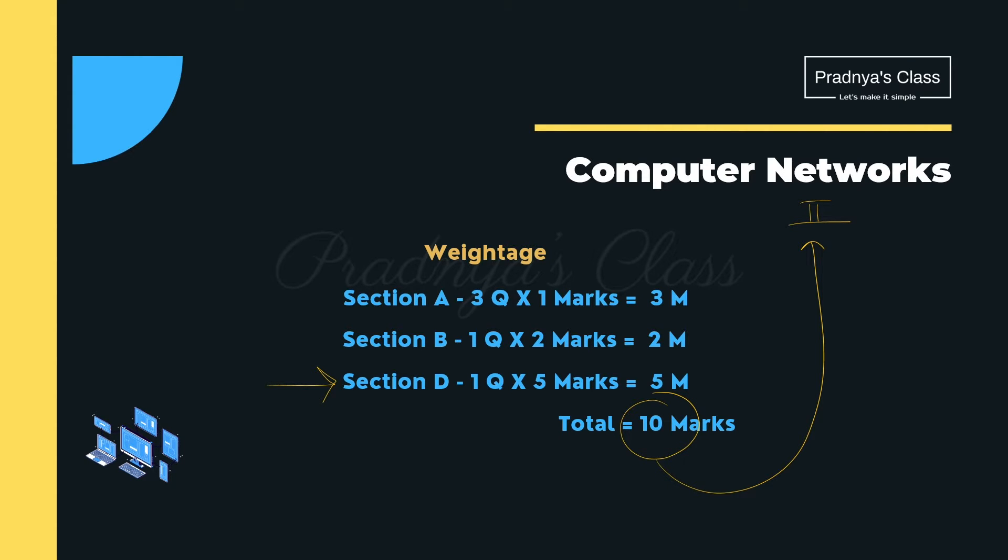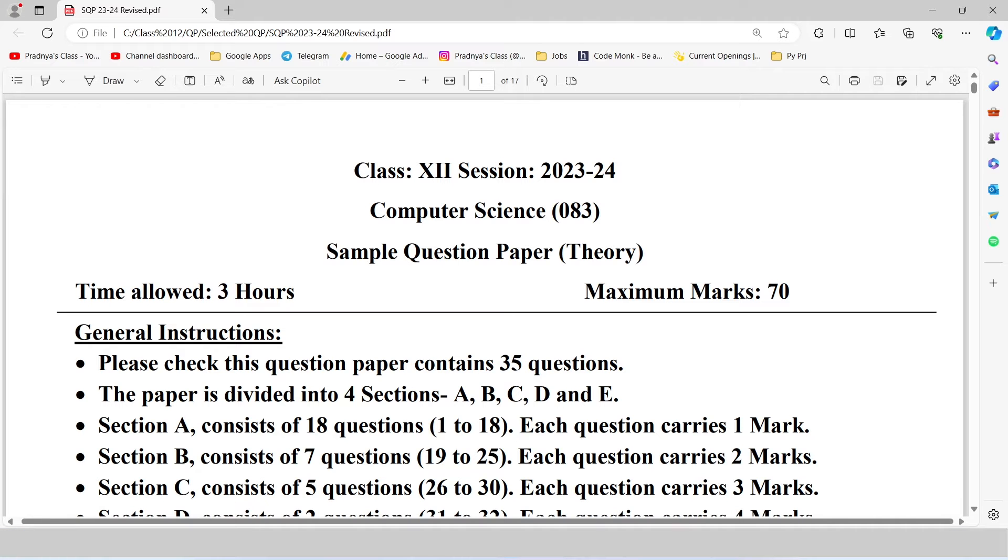In section D, surely you will be getting one question for 5 marks. It is generally a case study based question and it will be very easy so that we can easily cover these 5 marks. What about the remaining 5 marks? You will be getting questions in section A as well as in section B. There may be a slight variation in the distribution. Alright, then let's try to solve some of the questions based on computer networks.